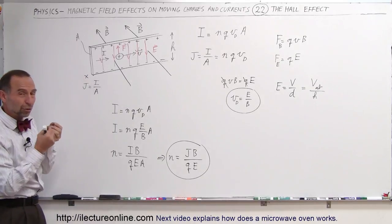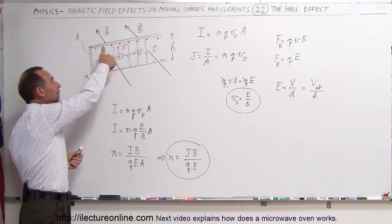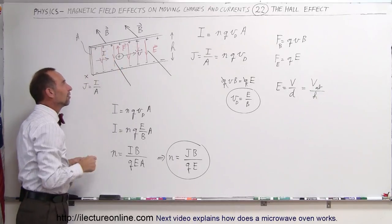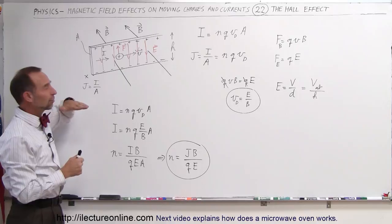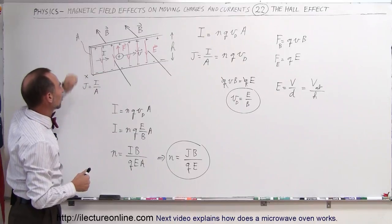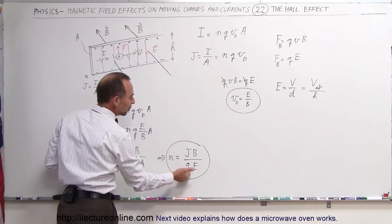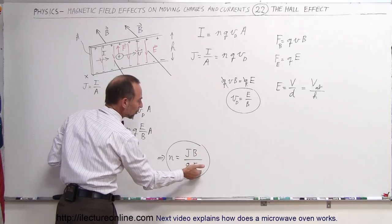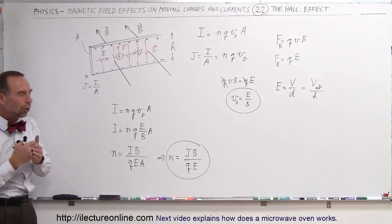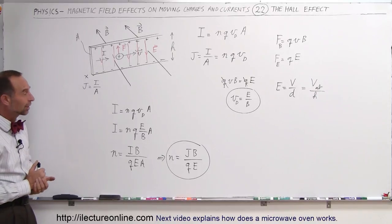Hall determined two things: first, he could identify the type of charge moving through the conductor depending on how the potential difference is set up. For example, if these were negative charges, they would move to the bottom instead, giving a different polarity. So we have N equals J times B divided by Q times E. B, E, and J are all measurable, and Q is known — so we can calculate the number of charges moving in the conductor due to the Hall effect. Pretty clever.